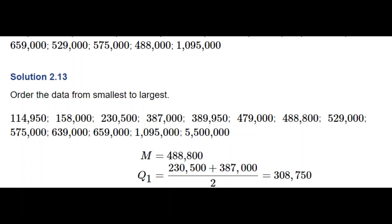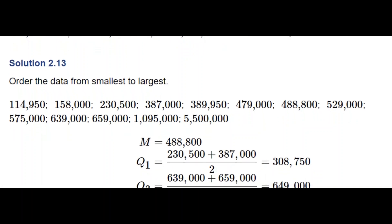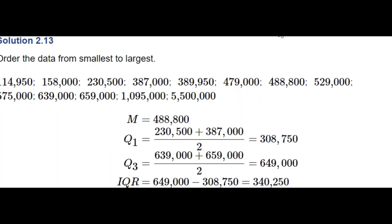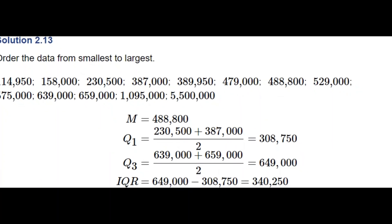Similarly, Q3 is the median of the second half of the data set. It is the midpoint of $639,000 and $659,000, which turns out to be $649,000. After knowing Q1 and Q3, we can find the interquartile range: Q3 minus Q1 equals $340,250.